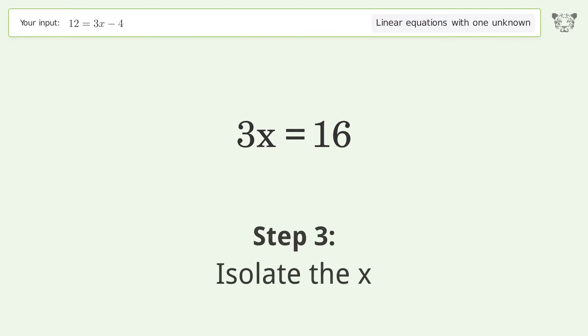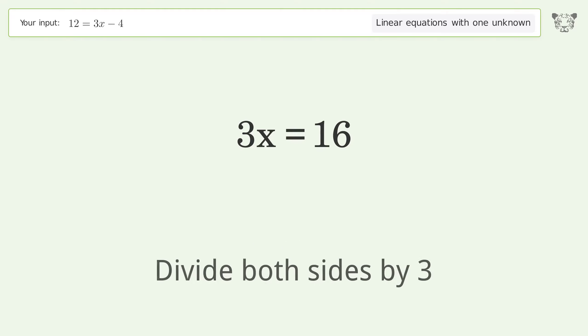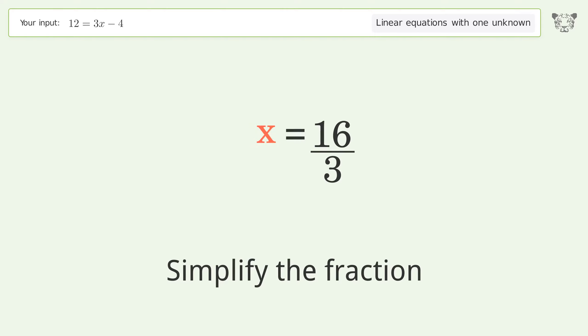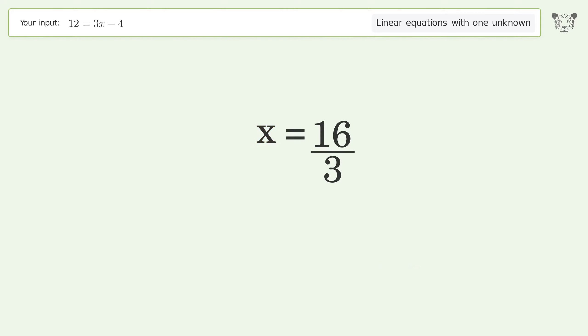Isolate x by dividing both sides by 3 and simplify the fraction. The final result is x equals 16 over 3.